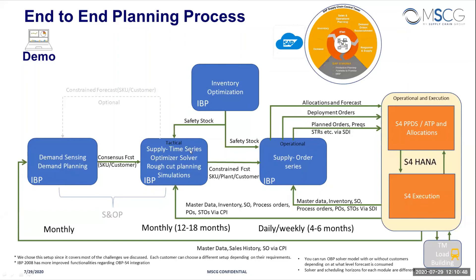We then move to tactical planning, where we run the time-series optimizer solver. You can do rough-cut planning, simulations, and everything else. It's typically run in monthly buckets over a 12-to-18-month horizon, usually once or twice a month. We also model the customer here to get the constrained forecast and assign the plan. This is then sent to the order-based planning layer, which operates in a tactical-to-operational window using daily or weekly buckets over a shorter horizon of four to six months.